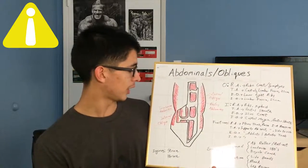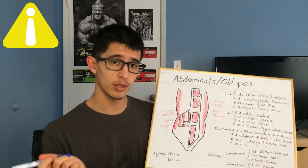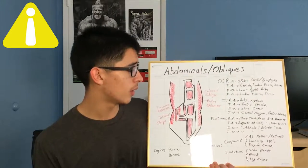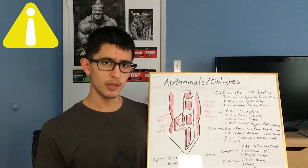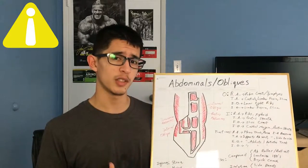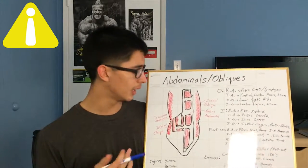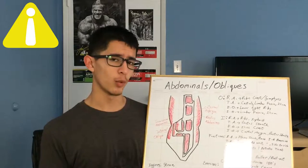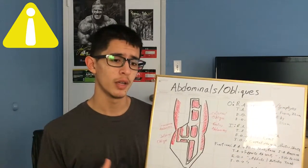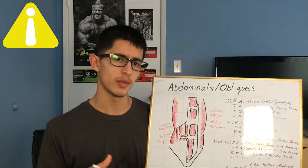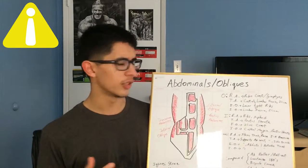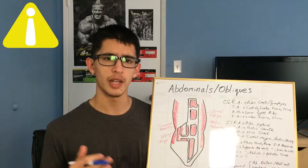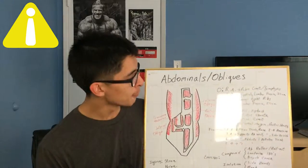For the transverse abdominis: it supports the abdominal wall, helps with intra-abdominal pressure, and helps moving the body side to side. Since the fibers run horizontally, it helps move the torso in a side-to-side motion. It also supports the abdominal wall — being beneath the rectus abdominis, it helps create support and stability. It's also one of the key players in helping with digestion, since your digestive organs don't have enough power to push food along on their own.